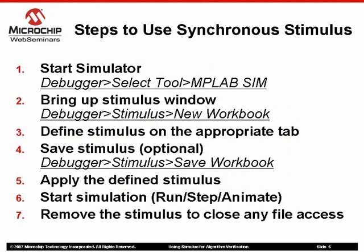Here is an overview of the steps to use synchronous stimulus. Stimulus is only available for the simulator, so you need to load the simulator debug tool by selecting Debugger > Select Tool > MPLAB Sim from the menu. Next, select Debugger > Stimulus > New Workbook from the debugger menu to bring up the stimulus window. Alternatively, you can use Open Workbook to load existing stimulus definitions. Click on the appropriate tab to configure the type of stimulus you desire. You may save the defined stimulus at any time by clicking the Save button or selecting Debugger > Stimulus > Save Workbook.